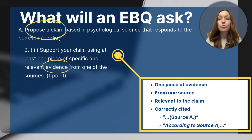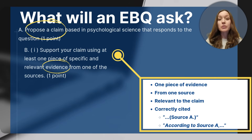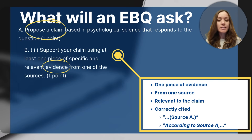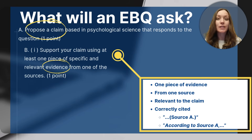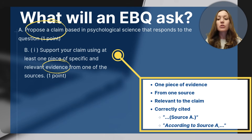Another option is to directly mention the source within the sentence, like saying 'According to Source A, 80% of female participants saw improvement using the medication for two weeks.' You could also say 'As presented in Source A' or 'Source A notes that.' This first piece of evidence needs to connect to the claim and be relevant to it. You must also cite the source. It's only one point, so you need to both present relevant evidence and cite the source to earn it.